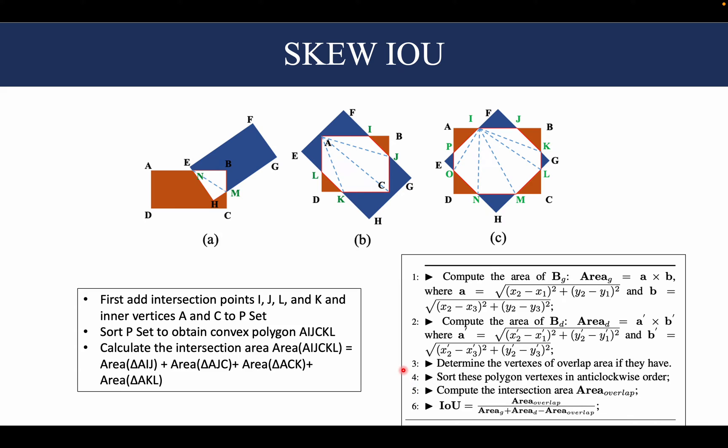When we compare it with the IOU calculation case of horizontal object detection, in that case the algorithm was just one line of code where we had to calculate the min and max operations of the various corners. As compared to that, this is a very elaborate algorithm.